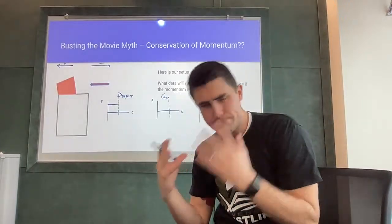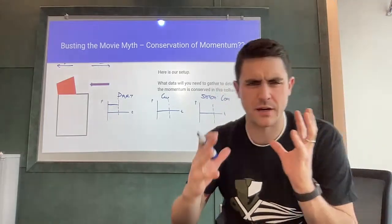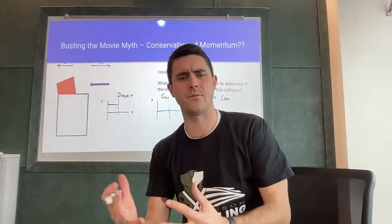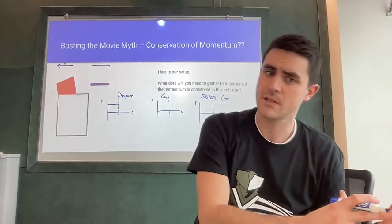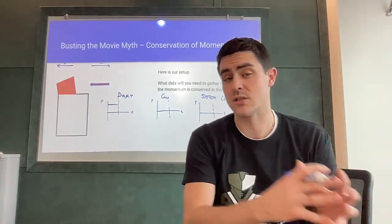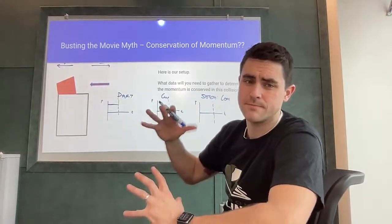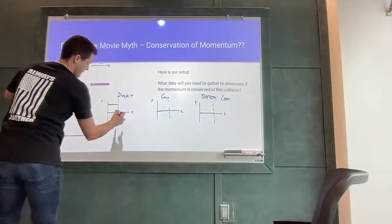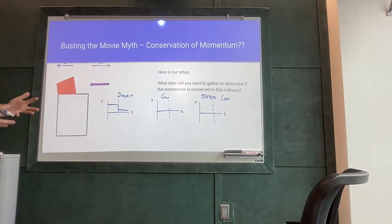When the dart collides with the cup, is there a force on the dart? Yes - the cup pushes back on the dart. The cup has inertia and mass, so it applies a force back on the dart opposite the direction of its motion, slowing it down. The velocity decreases, therefore the momentum of the dart decreases. But the dart continues moving forward, so it still has positive momentum - just a much smaller positive momentum. We see a quick decrease in momentum.